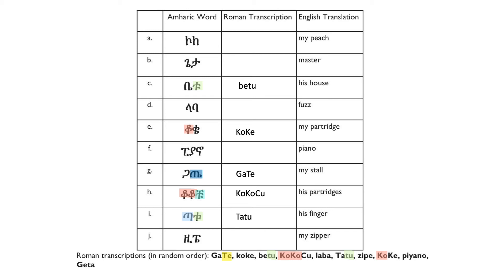We can use this pattern to solve for B and J. In row B, the first syllable has a circle, and the only syllable in the list that is both the first syllable and has vowel E is GETA with a big G. Thus we found the answer for B. However, we can't find the answer for J just yet — there are two transcriptions left that both have E as a vowel: KOKIE and ZIPPY. Looking at row J, the two scripts probably do not share a consonant or vowel since they don't resemble each other, but I decided to leave it until I have a clearer clue.